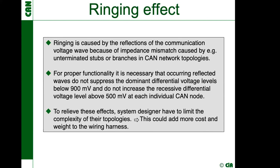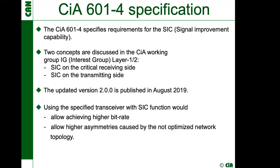For proper functionality, reflective waves must not suppress the dominant differential voltage below 900 mV or increase the recessive differential voltage level above 500 mV at each CAN node. To relieve these effects, system designers must limit the complexity of their topologies — which could add cost and weight to the wiring harness, for example by avoiding long un-terminated stubs or reducing the number of nodes in a linear network. CIA established a task force on signal improvement and released CIA 601 Part 4.